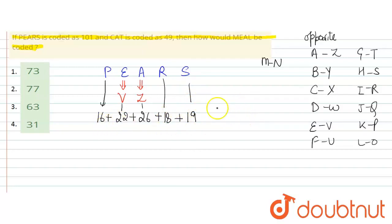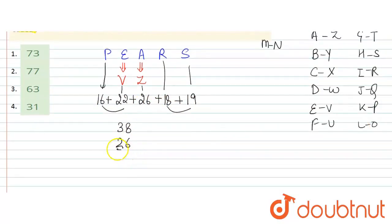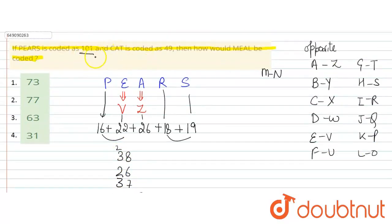So add these. Adding these two gives 38. Here 26, and adding these two gives 37. So adding this gives 1 here. Then carry 2. 3 plus 3 is 6, 7, 8, 9, 10. So here you get 101. And the code 101 is also given.